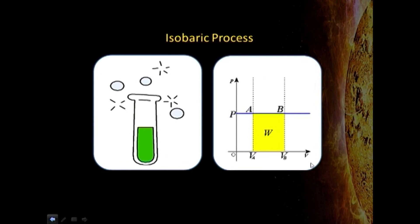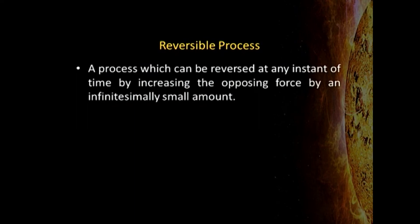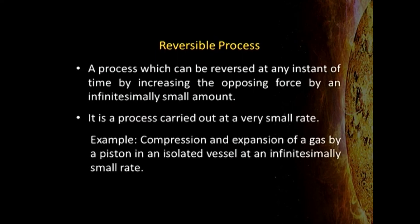In an isobaric process, the pressure is maintained constant while the volume can change. In an isochoric process, the volume is not allowed to change — the system is enclosed in tight boundaries that do not expand. In a reversible process, the system changes from one state to another through infinitesimally slow steps, such that each step looks like an equilibrium. Even compression or expansion of a gas can be carried out reversibly, but it must proceed as slowly as possible.